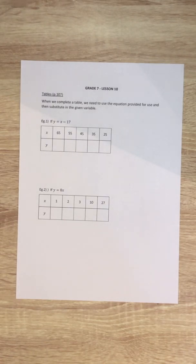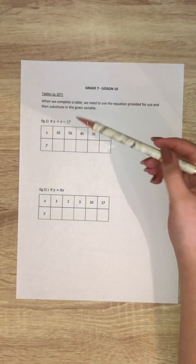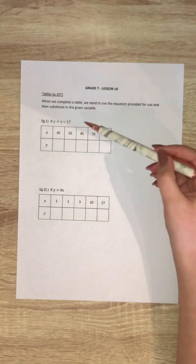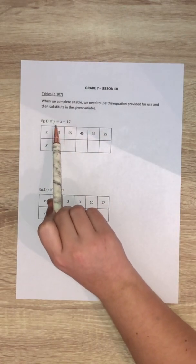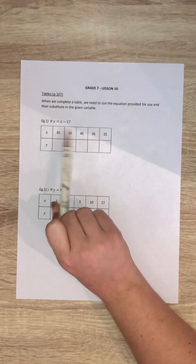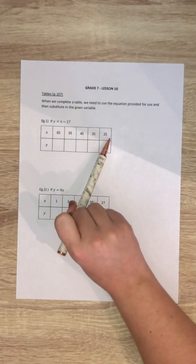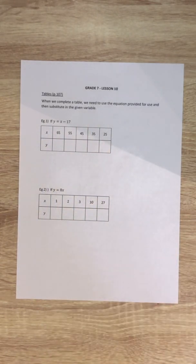When we complete a table we need to use the equation provided for use and then substitute in the given variable. Basically what that means is we will always be given our equation and then we'll be given some values. In this case it's the x values. We need to work out the y values.